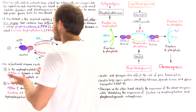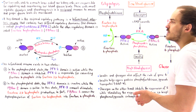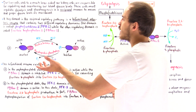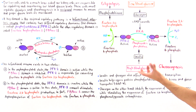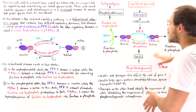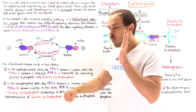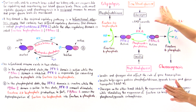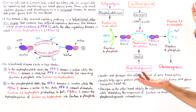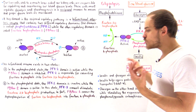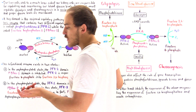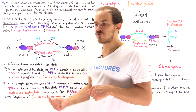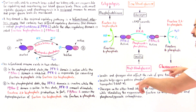Now that we know the key element — the bifunctional allosteric enzyme in liver and kidney cells used to regulate glycolysis and gluconeogenesis — let's see how this plays out under two different conditions: high blood glucose levels and low blood glucose levels. Let's begin with high blood glucose levels. Suppose we just ate a meal rich in carbohydrates; we break down the carbohydrates into individual glucose molecules, and the concentration of glucose in the blood rises.